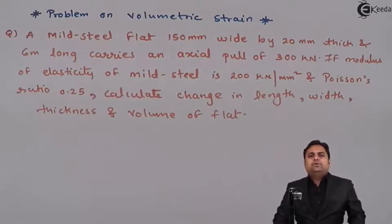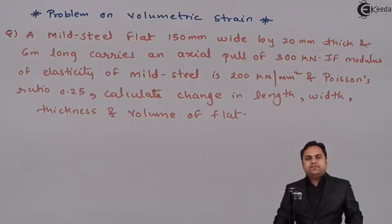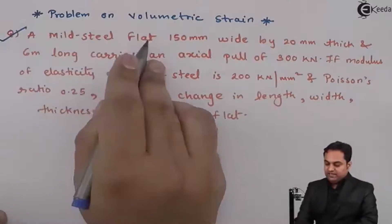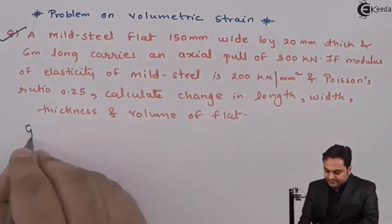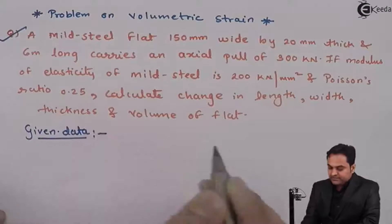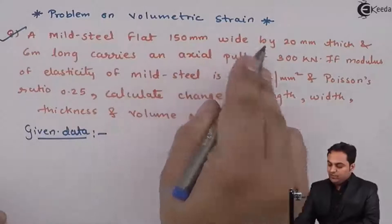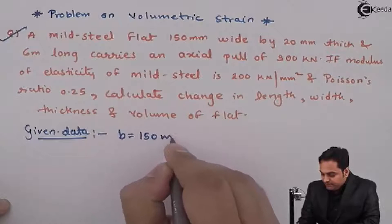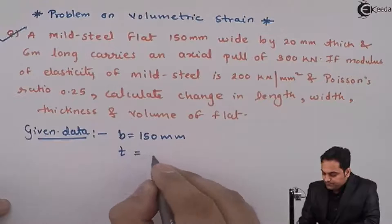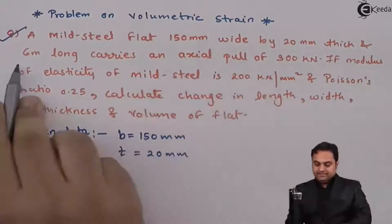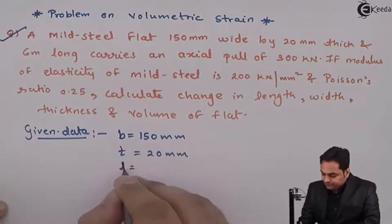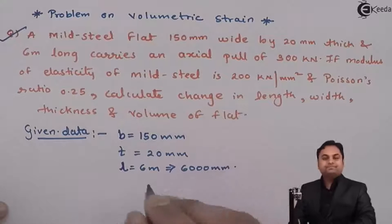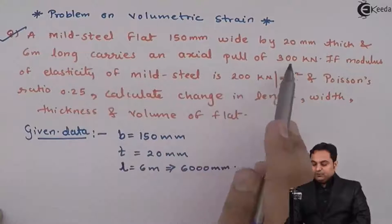Hello friends, in this video we are going to see a problem based on volumetric strain. We have a question: a mild steel flat, 150 mm wide and 20 mm thick, 6 meters long (6000 mm).